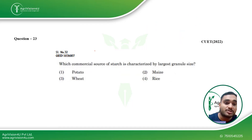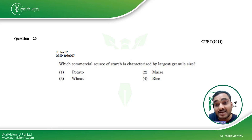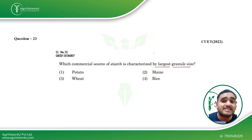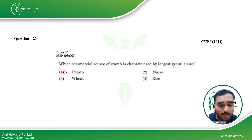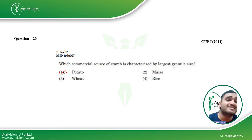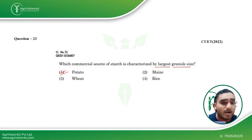Coming to the next question: which commercial source of starch is characterized by the largest granule size? This topic may not be covered in many reference books, but the answer is potato — potato starch has the largest granule size. Maize, rice, and wheat starch are comparatively smaller in size.